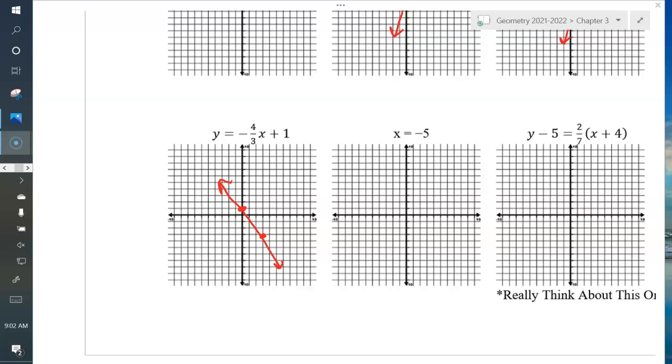Next one, x equals 3. That one's vertical because it's x equals. Sorry, x equals negative 5. So go to negative 5. 1, 2, 3, 4, 5. And then draw a vertical line. There you go.